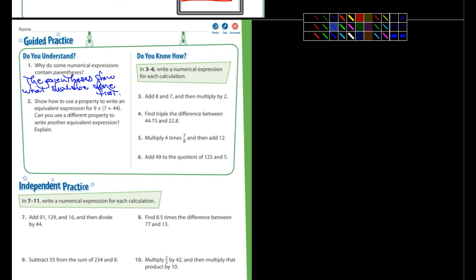Number two, show how to use a property to write an equivalent expression for 9 times, and then in parentheses, 7 plus 44. My first thought was the example we were just looking at a moment ago. We could write it like this. How about 9 times 7, I'll put that in parentheses, plus 9 in parentheses times 44. That would be equal to that expression. You're going to come up with the same answer. Can you use a different property? Yeah, we just did that. Explain, yeah, I just showed it to you. One and two, we're done for you.